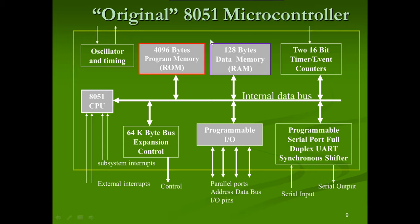The 8051 architecture includes a CPU, four programmable I/O ports (parallel, bidirectional), RAM, ROM, and two 16-bit timer/counters. It also has a programmable full-duplex serial port (UART — Universal Asynchronous Receiver Transmitter) for serial communication. The crystal oscillator frequency of the 8051 is 11.0592 MHz.